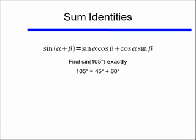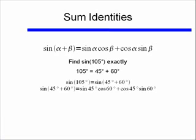We know what the sine and cosine of 45 degrees and 60 degrees are, so if we use our sum identity for sine, we'll find that the sine of 105 degrees equals the sine of the quantity 45 degrees plus 60 degrees. The trick is recognizing 105 degrees as the sum of two known angles, like 45 and 60 degrees. Using the sum identity, sine of 45 plus 60 degrees equals sine of 45 degrees times cosine of 60 degrees, plus cosine of 45 degrees times sine of 60 degrees.